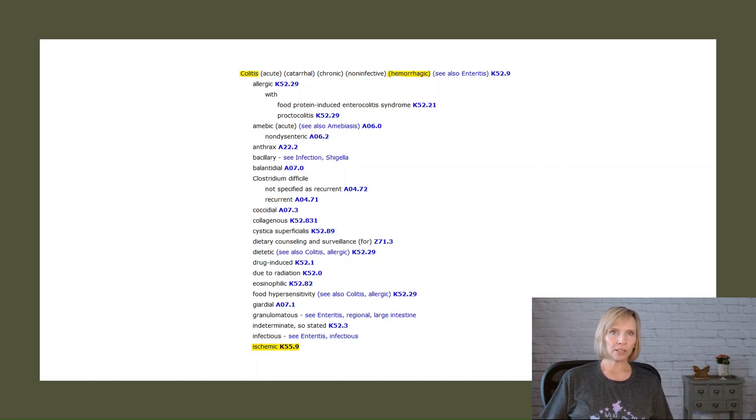For instance, if a patient is diagnosed with GI bleeding due to ischemic colitis, we would only need to assign code K55.9. There's no need for an additional code specifically for the GI bleed.